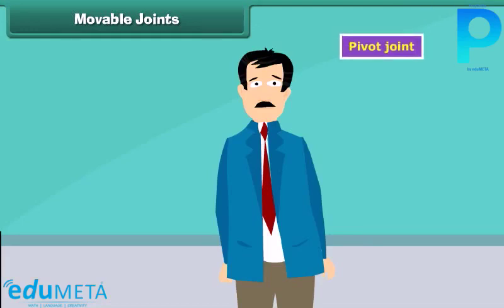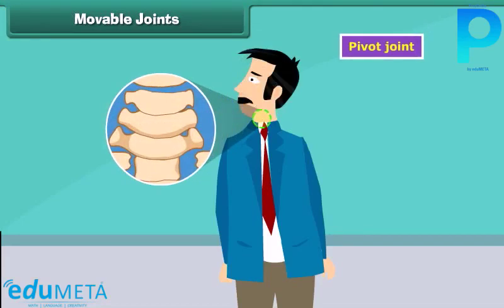Pivot joint. Our neck allows us to turn our head on both sides. Friends, have you ever thought about what makes this possible? This is possible because of the pivot joint.